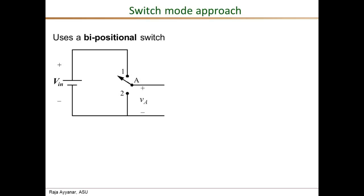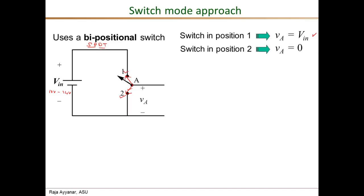This brings us to how we address this in a switch mode power electronics approach. Here we use a bi-positional switch, also called an SPDT — single pole double throw. The input and output specifications are the same: 10 to 14 volts input, regulated 5 volts DC output. We switch this bi-positional switch at very high frequencies. When the switch is in position one, the voltage VA equals the input voltage VIN. When the switch is in position two, VA is shorted by the switch, so VA equals zero.